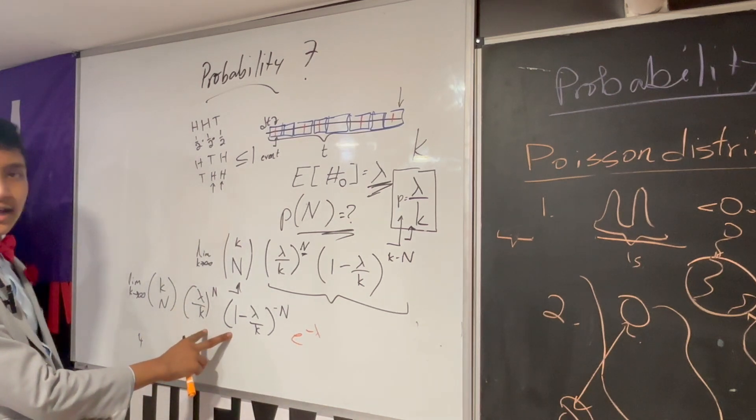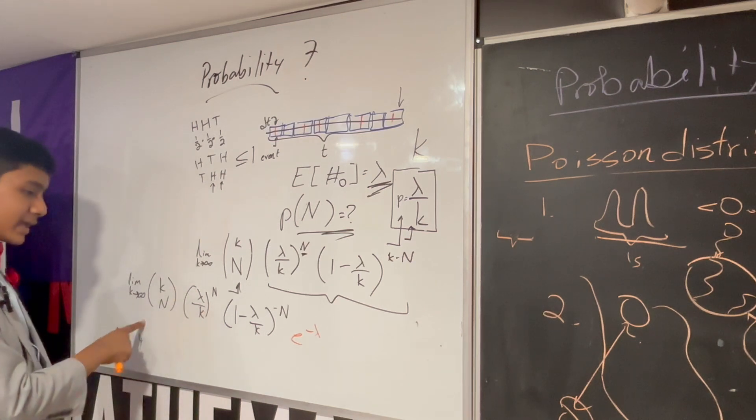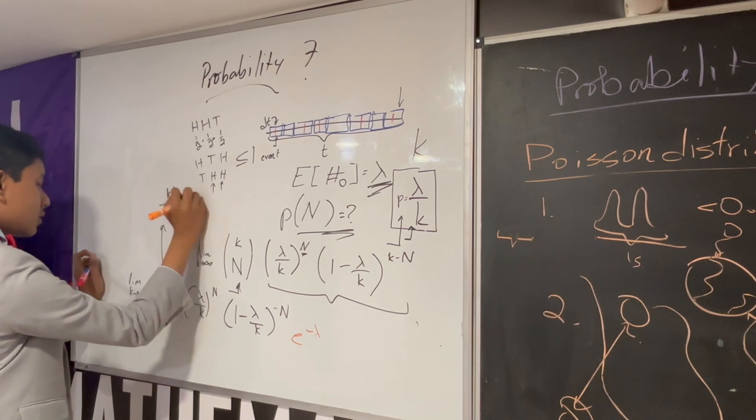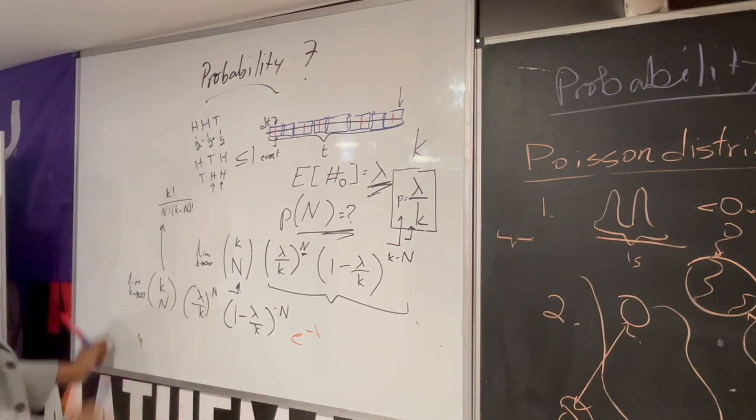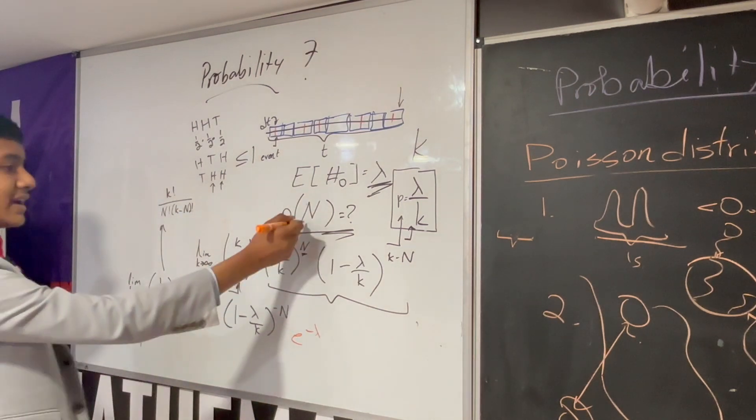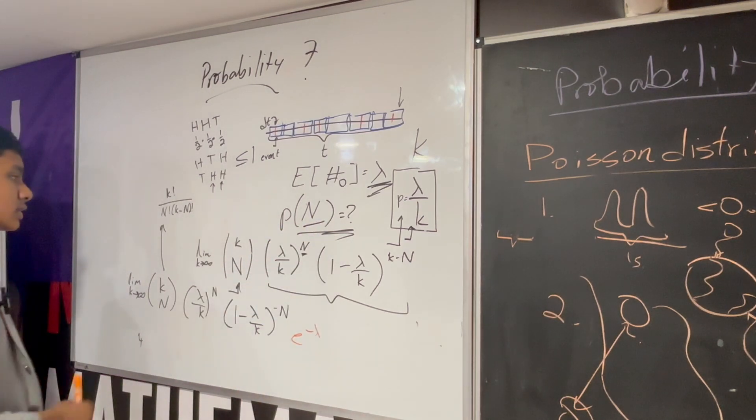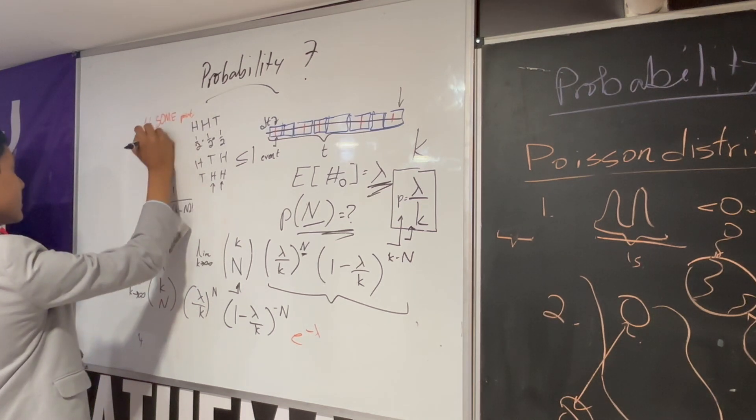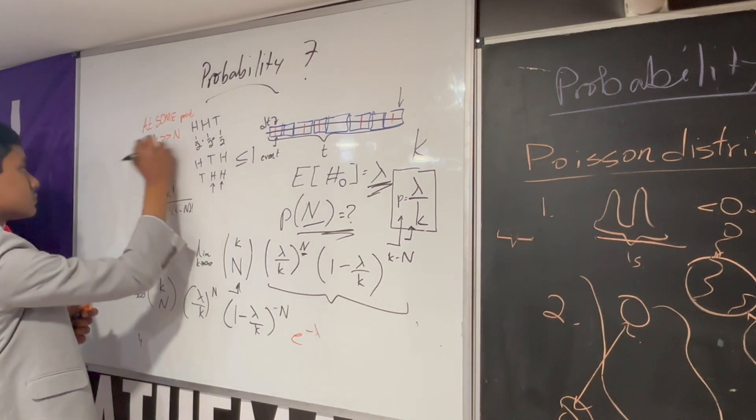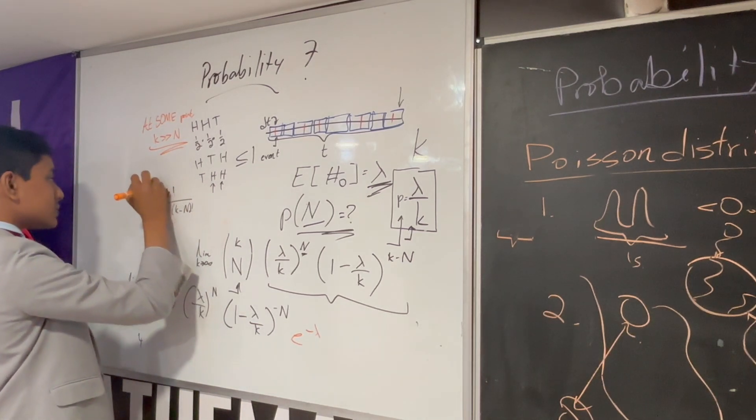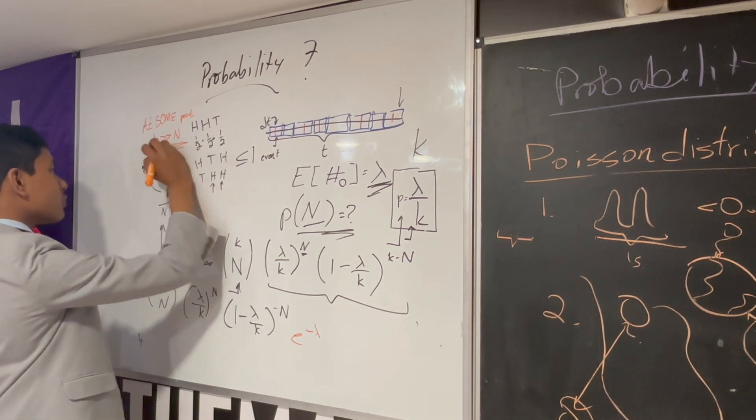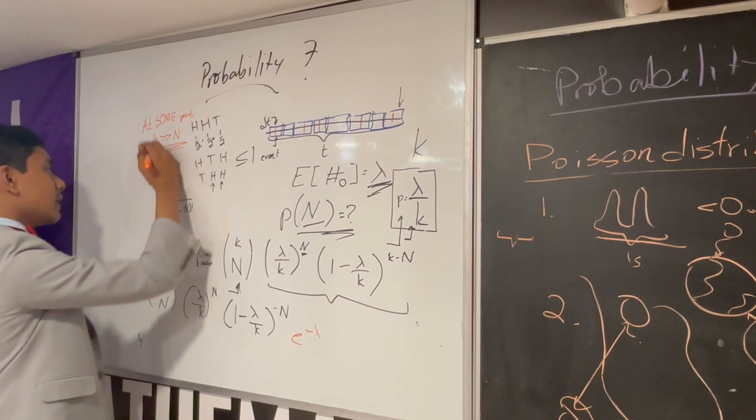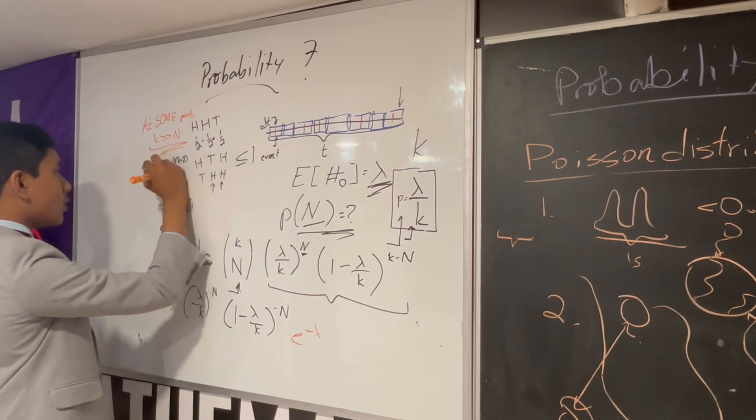Now, what do we do with the rest? Well, here, we need to consider what happens when k approaches infinity. So, we are first going to expand this out. This is going to be k factorial over n factorial k minus n factorial. N, at some point, is going to have to be, N is fixed, right? We're not looking for the probability that infinitely many events occur. So, N is a fixed number. And, at some point, k is going to be much larger than n.